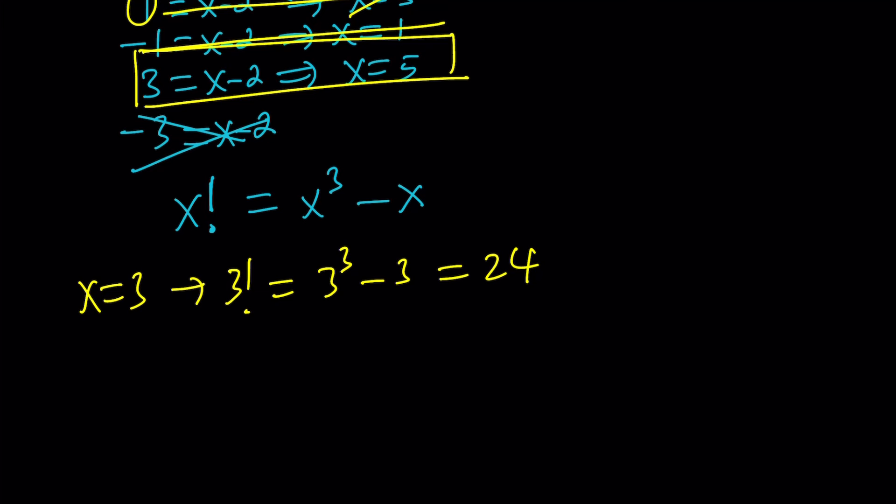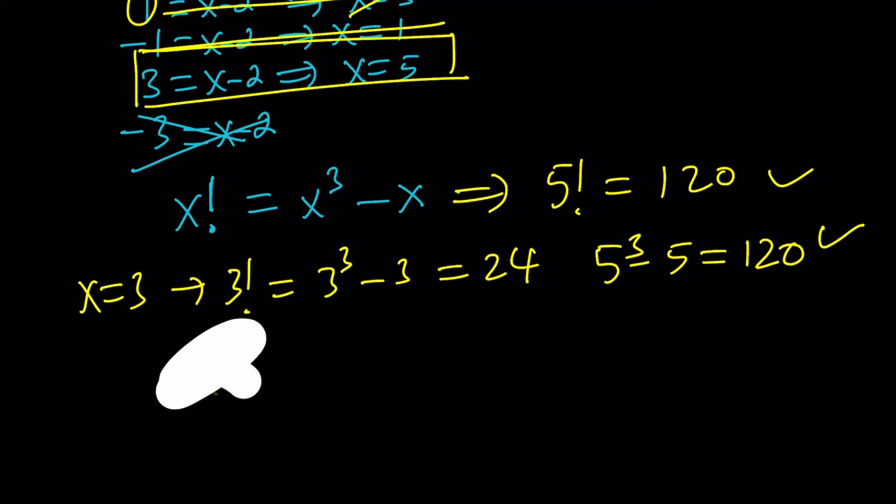Anyways, x factorial equals... We can go ahead and plug it in here. Here, 5 factorial is 120. And 5 cubed minus 5 is 125 minus 5. Again, this works. So this is good. And x equals 5 wins. Yay, we got a solution.